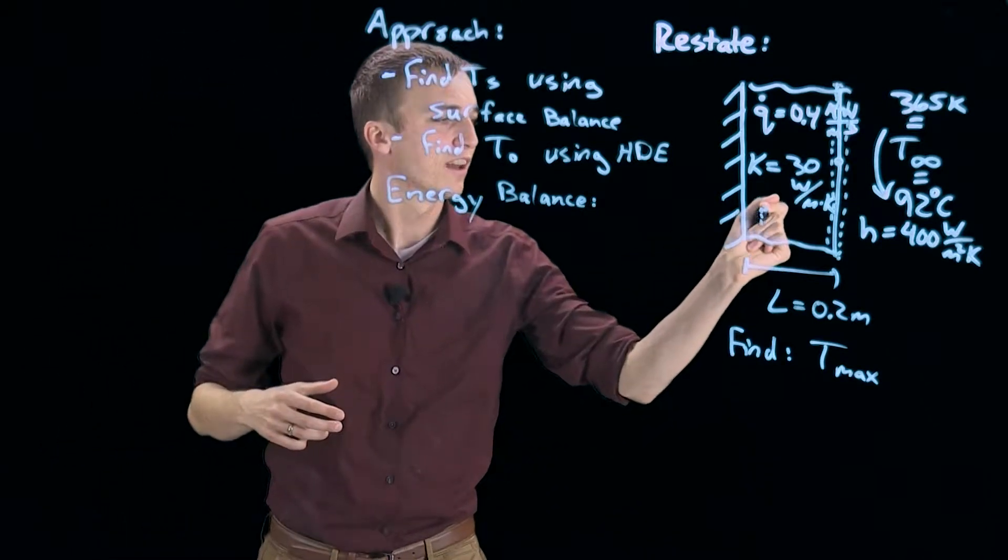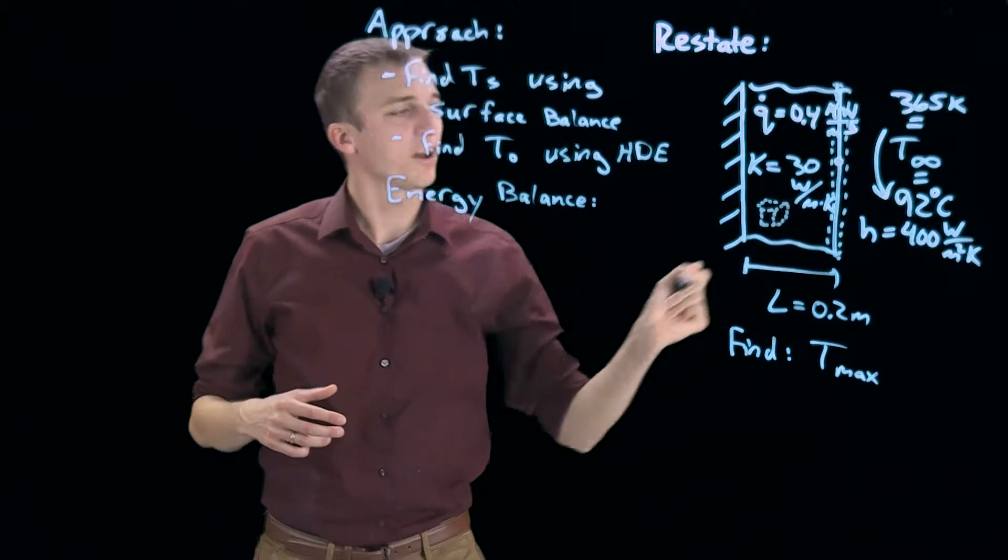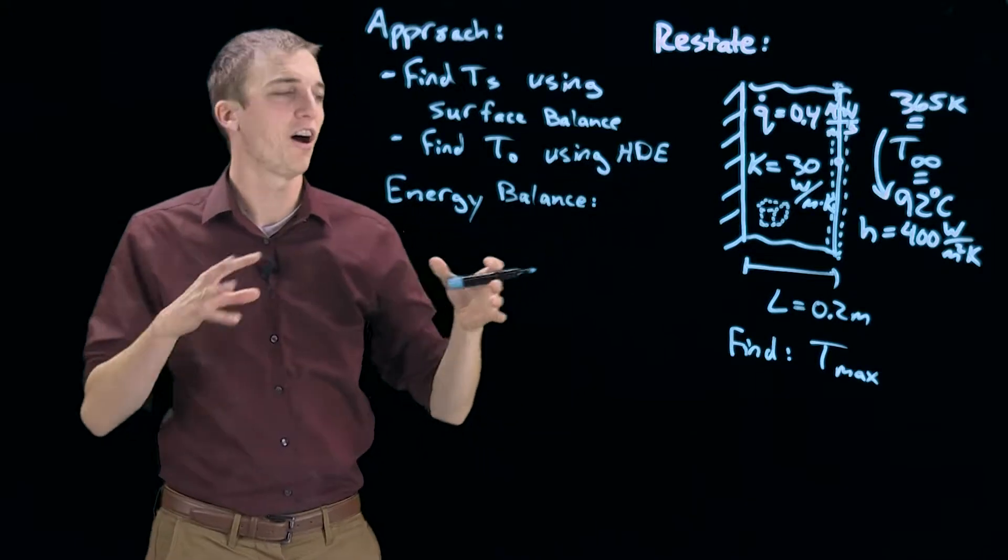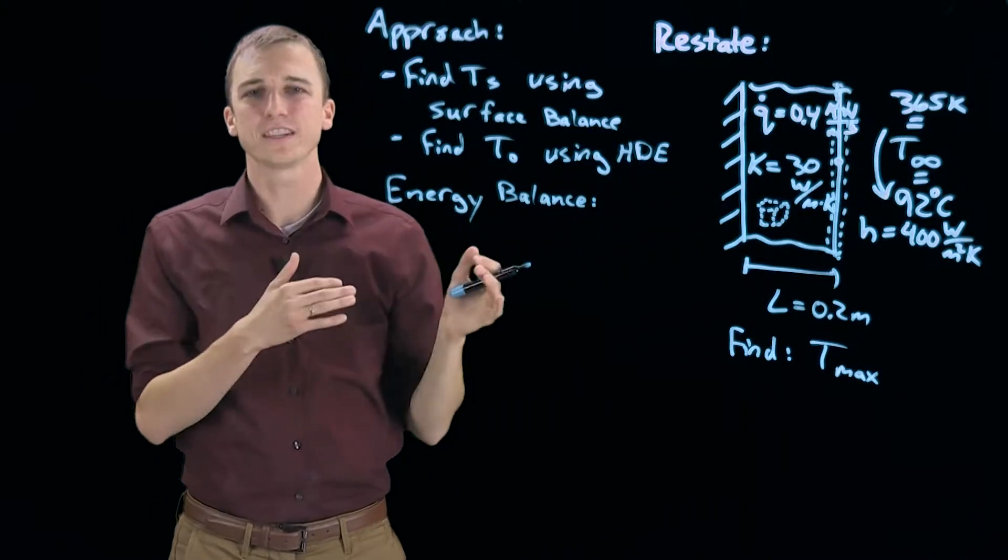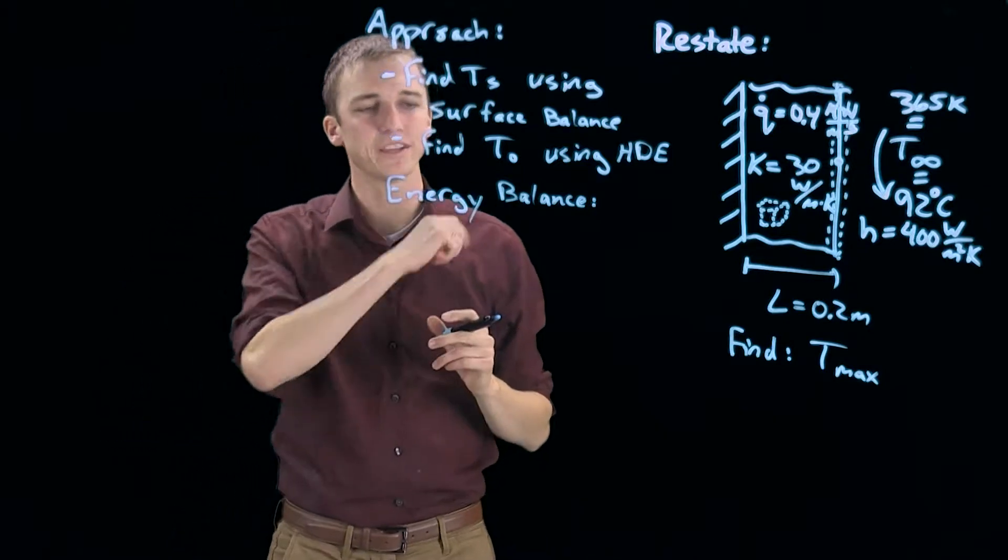Then I am going to draw a differential cubic element. Whenever I draw this that represents using the heat diffusion equation which is a balance on this cube of heat exchange, and we are going to use that to find the temperature profile. So there is our energy balance.